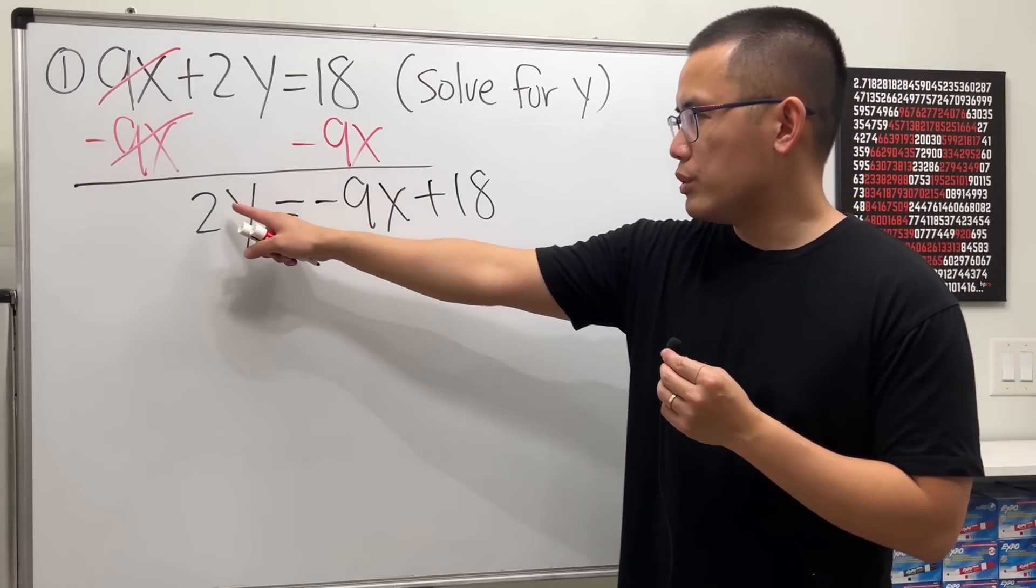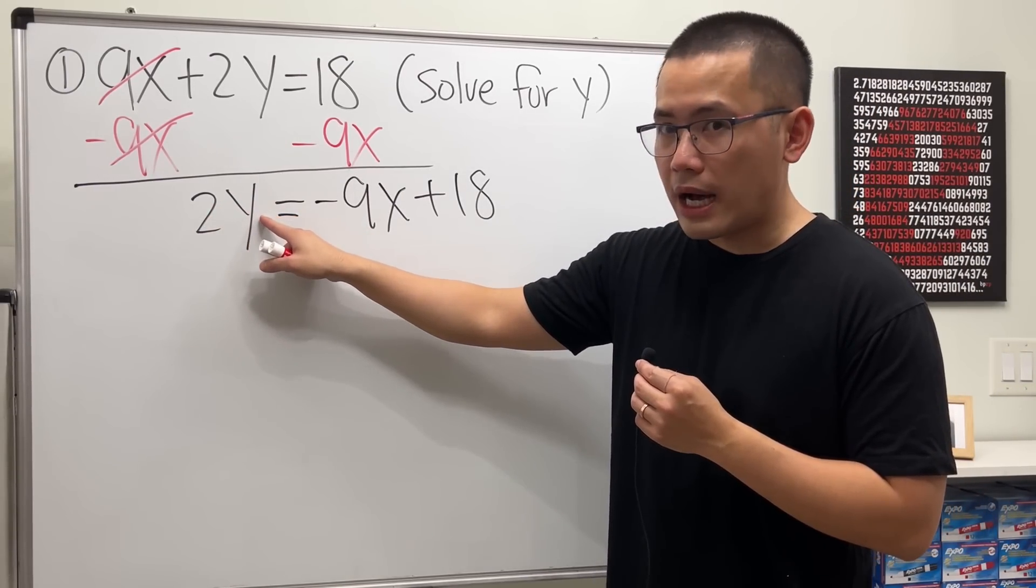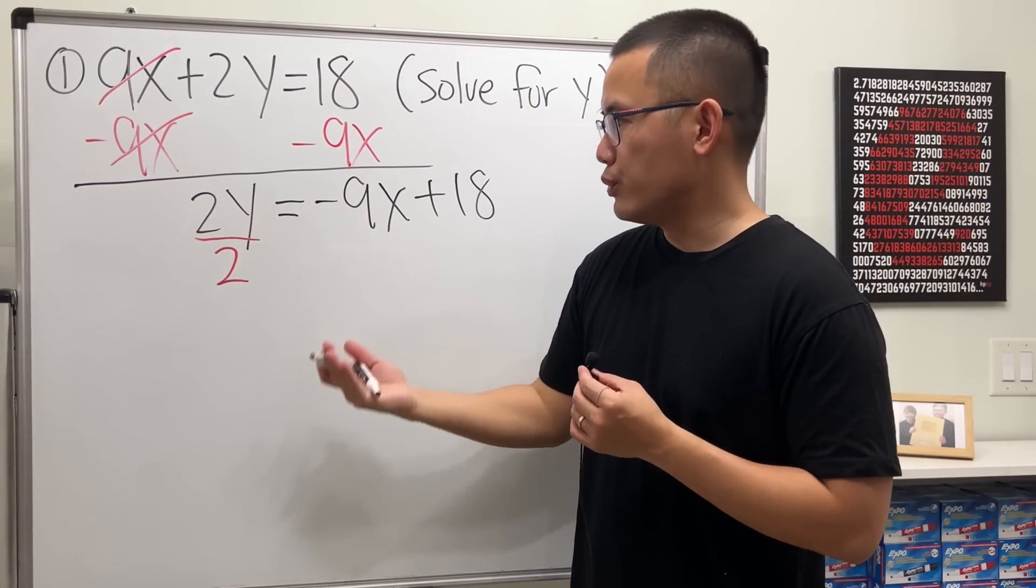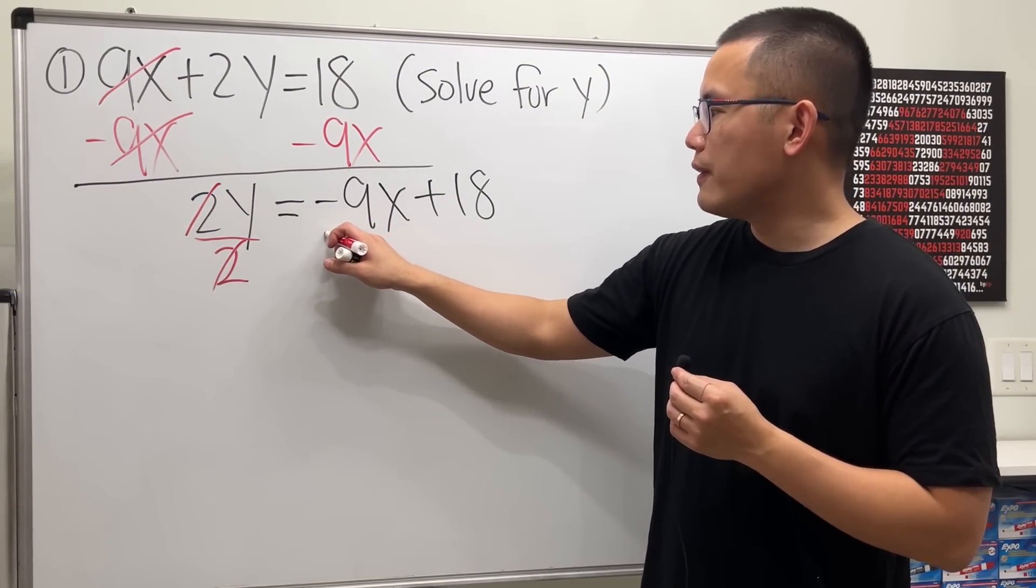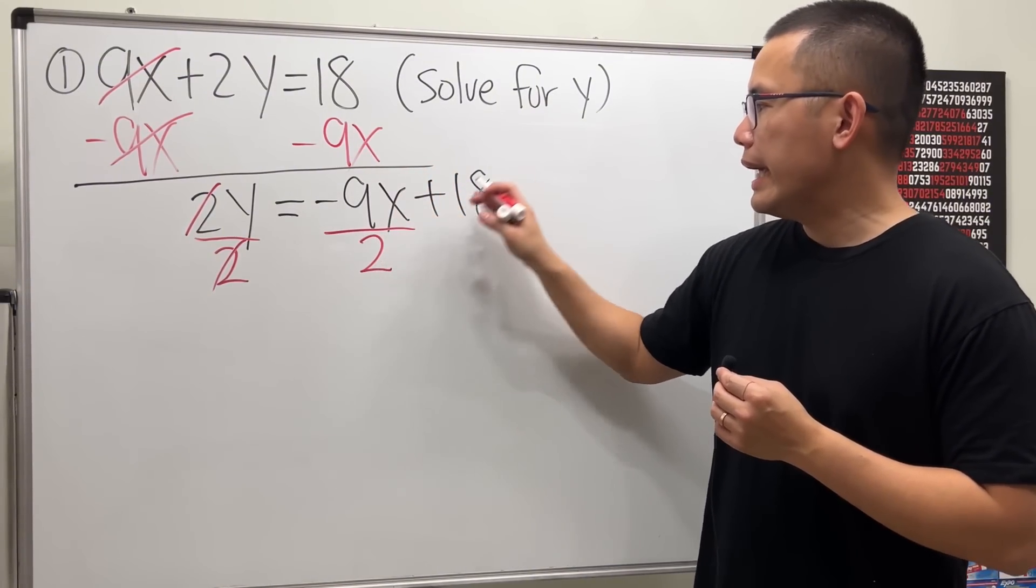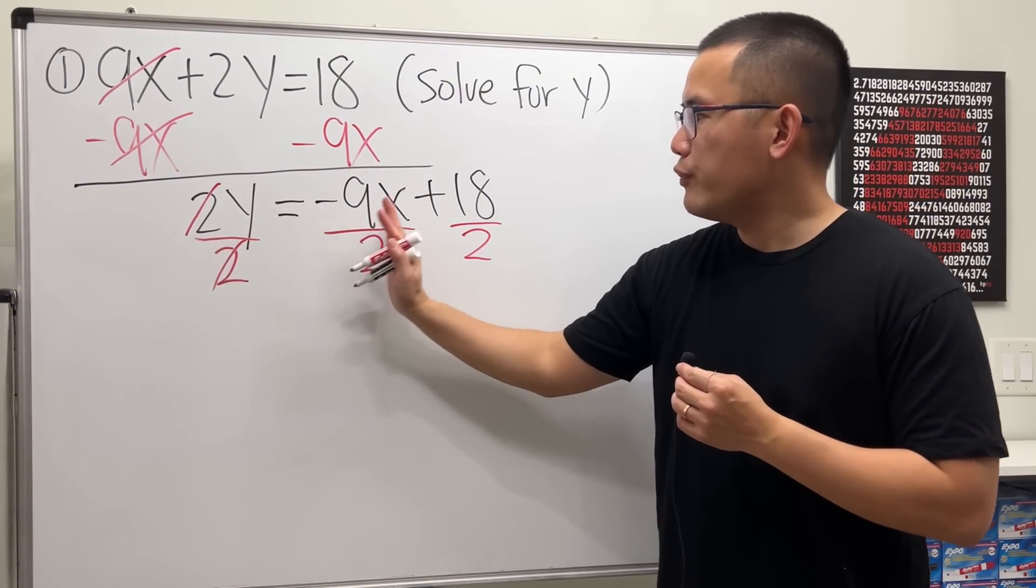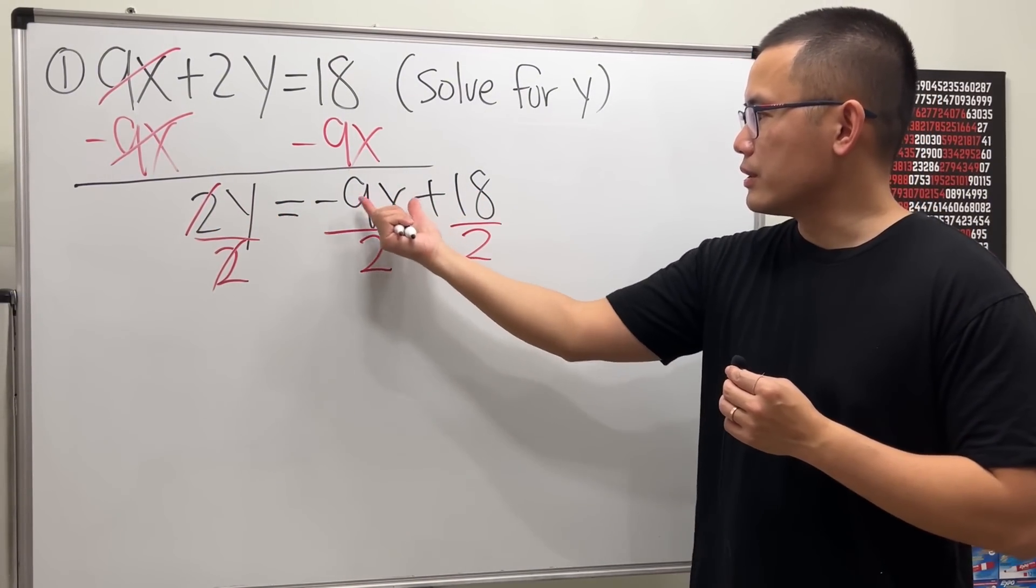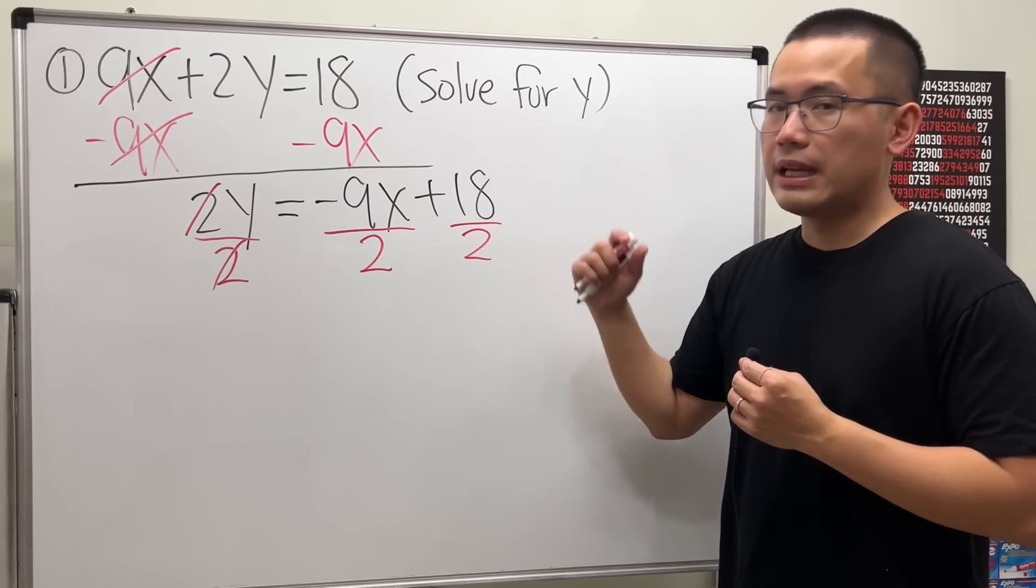Then we want to get rid of this 2, and this is 2 times y. So we will have to divide it by 2, because we have to do the opposite. This and that will cancel. And then let's make sure we divide this by 2, and also divide the 18 by 2. Divide everything by 2. Notice it's separated by the addition, right? So this is the first term you divided by 2. The 18, you divide that by 2.